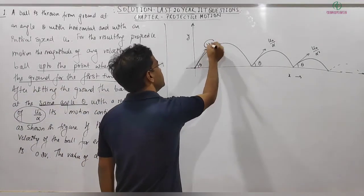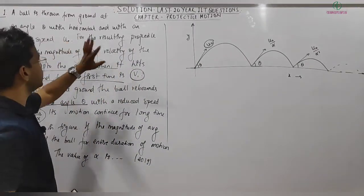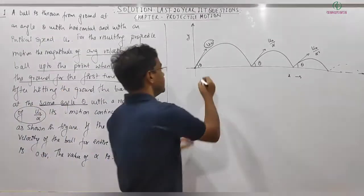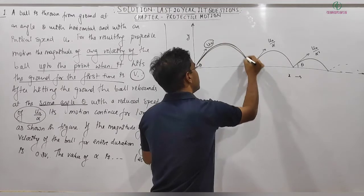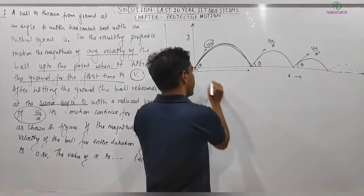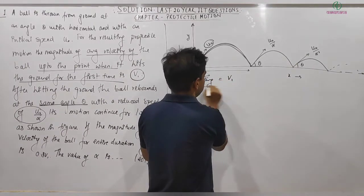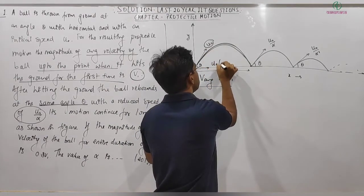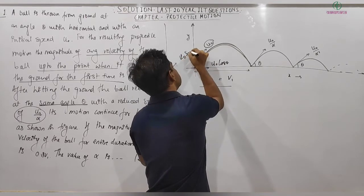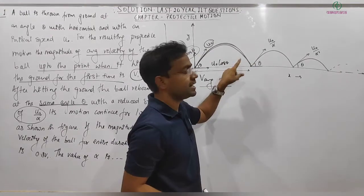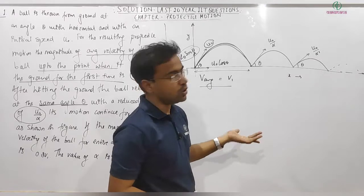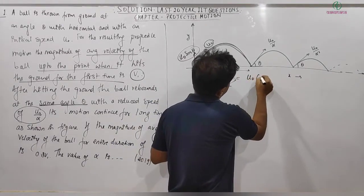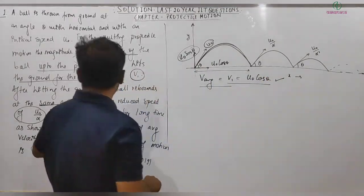After hitting the ground, the ball rebounds at the same angle theta with a reduced speed of u₀/α. Its motion continues for a long time as shown in the figure. If the magnitude of average velocity of the ball for the entire duration of motion is 0.8 v₁, the value of α is asked. For the first projectile, v₁ = u₀ cos θ, since net displacement in y-direction is zero, so average velocity in y is zero, and average velocity in x remains u₀ cos θ.